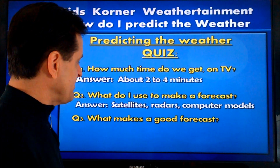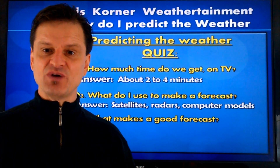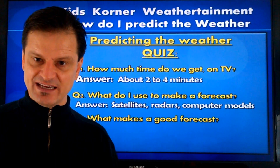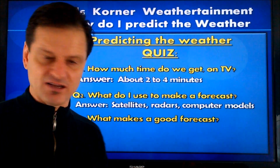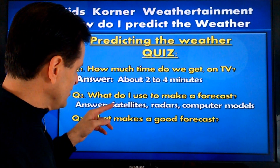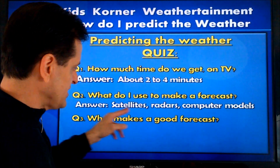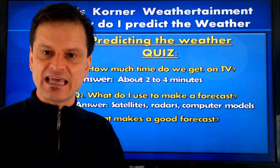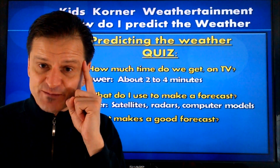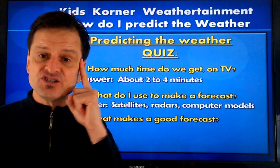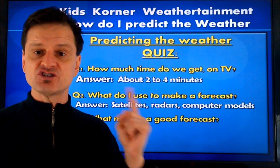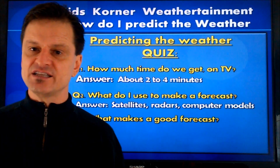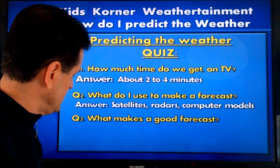What do I use to make a forecast? I showed you how the observation sites give us the current conditions throughout the state and throughout the country. I look at satellite pictures, radar images, and computer model simulations, as well as my own expertise and knowledge in knowing where storms and high-pressure systems form and where they tend to move based on where they formed.